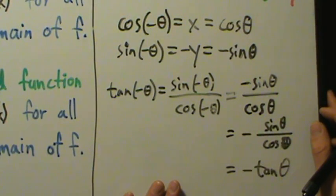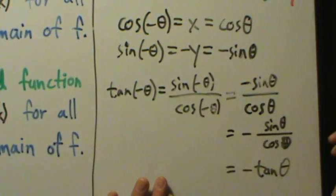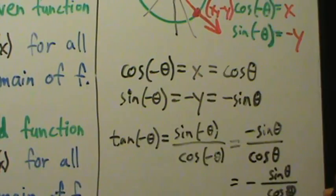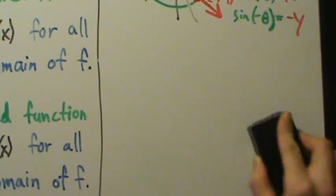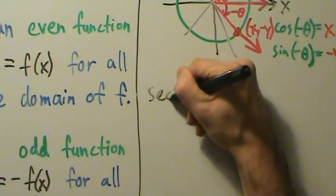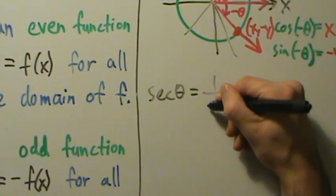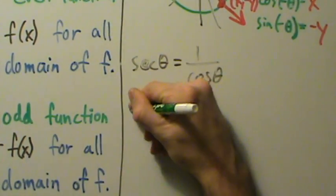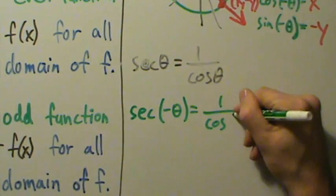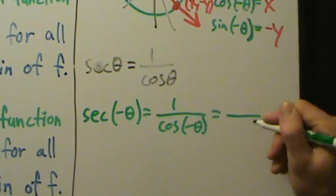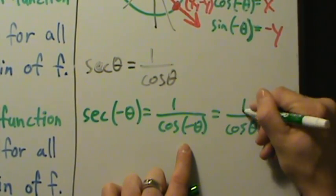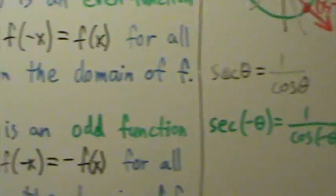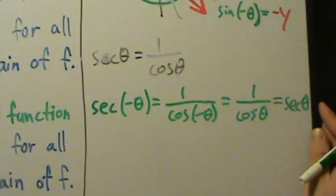The remaining three — secant, cosecant, and cotangent — follow straightforwardly. For secant: secant of theta equals 1 over cosine of theta. So secant of negative theta equals 1 over cosine of negative theta. We already know cosine of negative theta equals cosine of theta, so this becomes 1 over cosine of theta, which is just secant of theta. Therefore secant of negative theta equals secant of theta — that's an even function. So secant is also even.